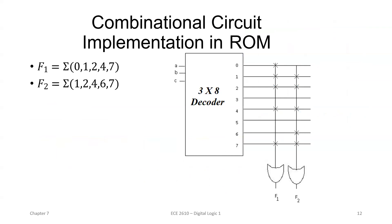For implementation in a combinational circuit using a ROM: A, B, C are 3 selection lines used as inputs, giving a 3 × 8 decoder with 8 outputs. Two sets of outputs are given, so 2 OR gates are programmed with the specified inputs based on the given min terms.